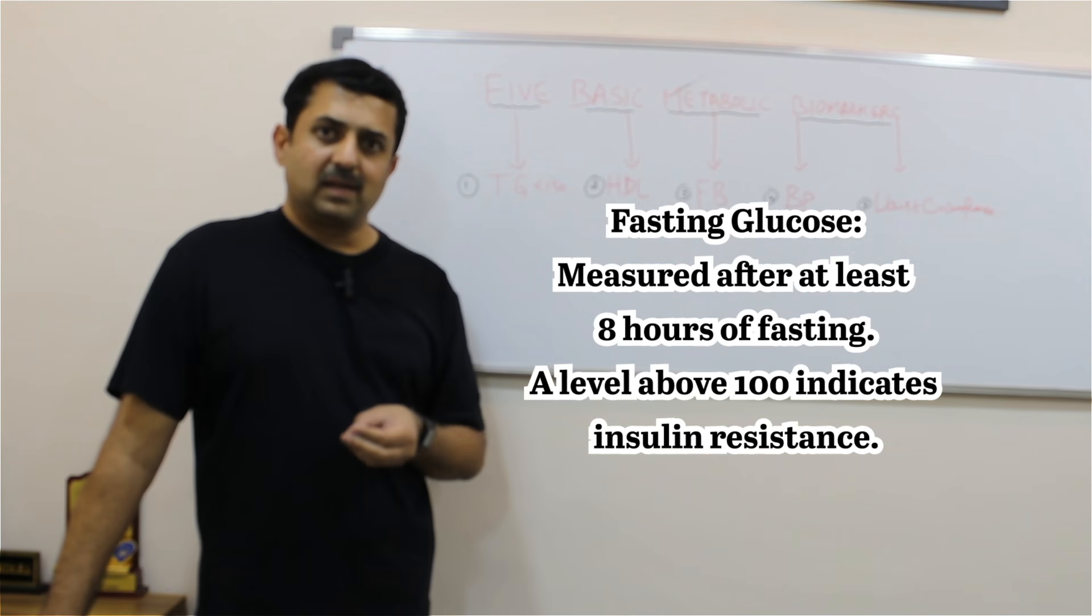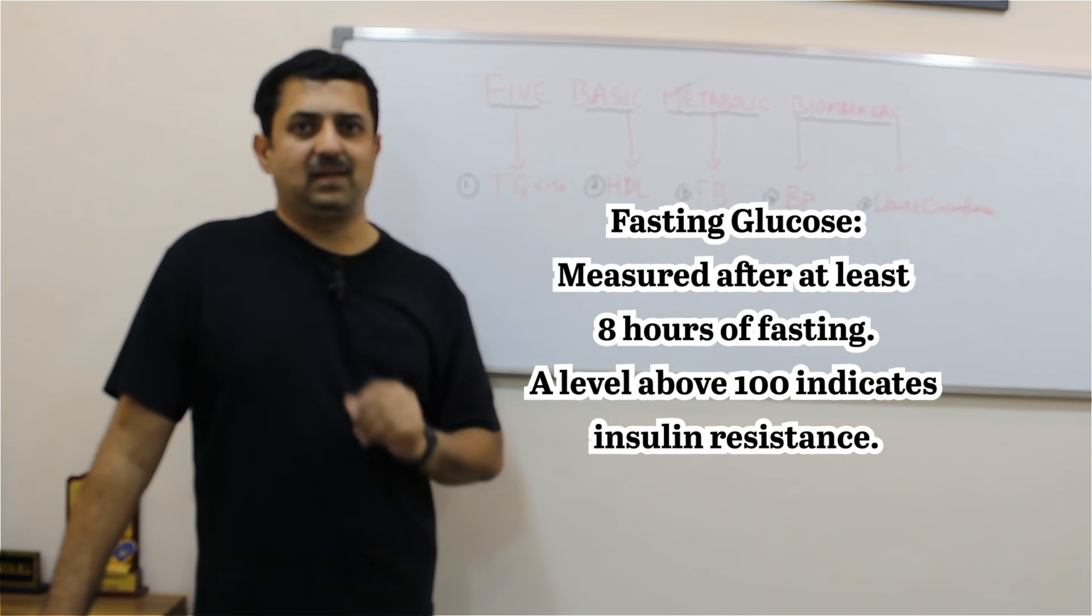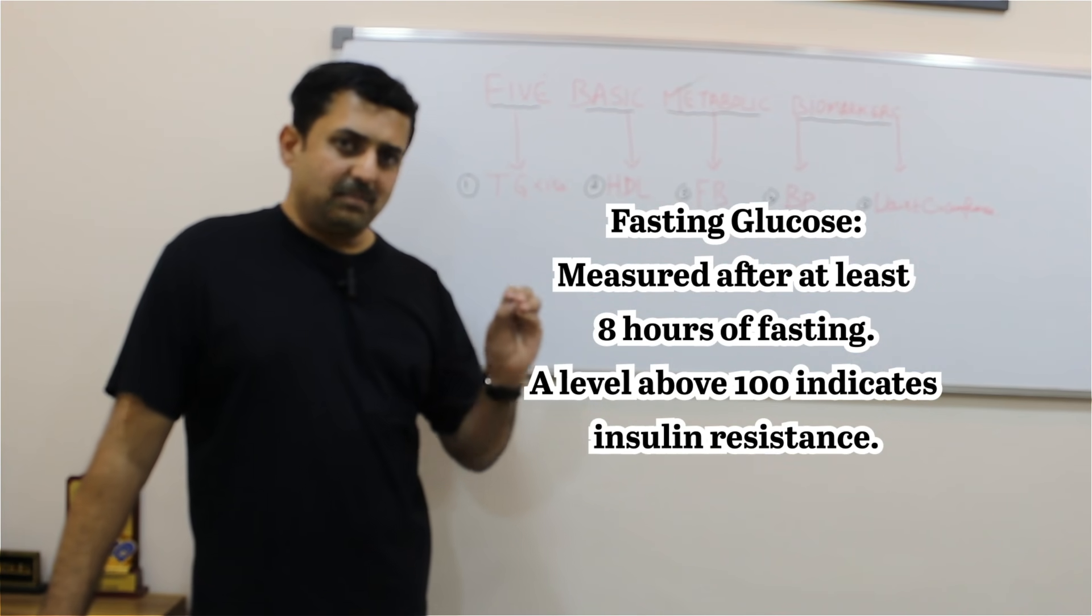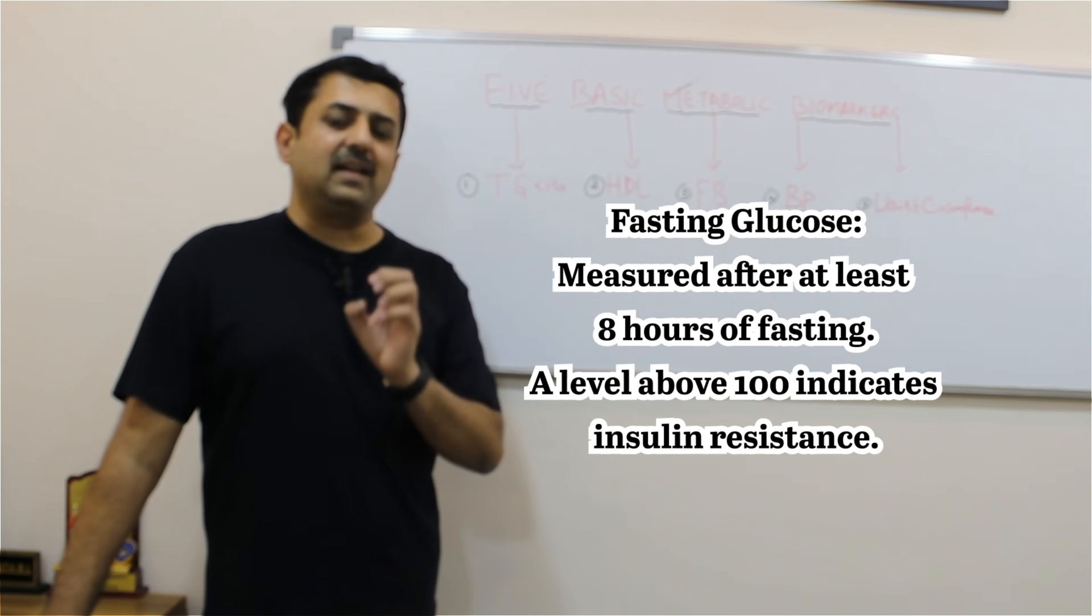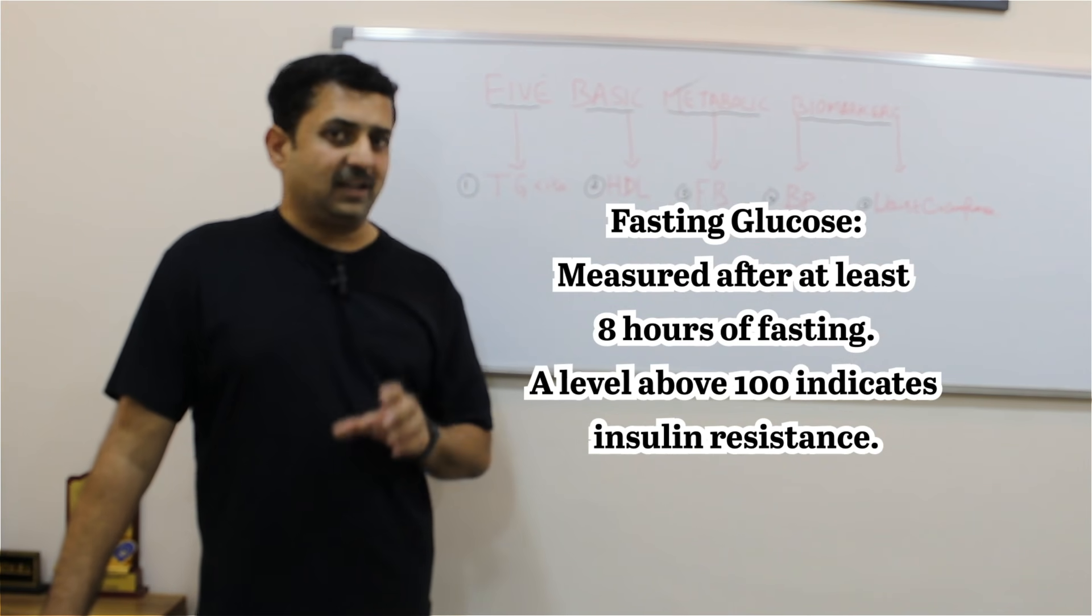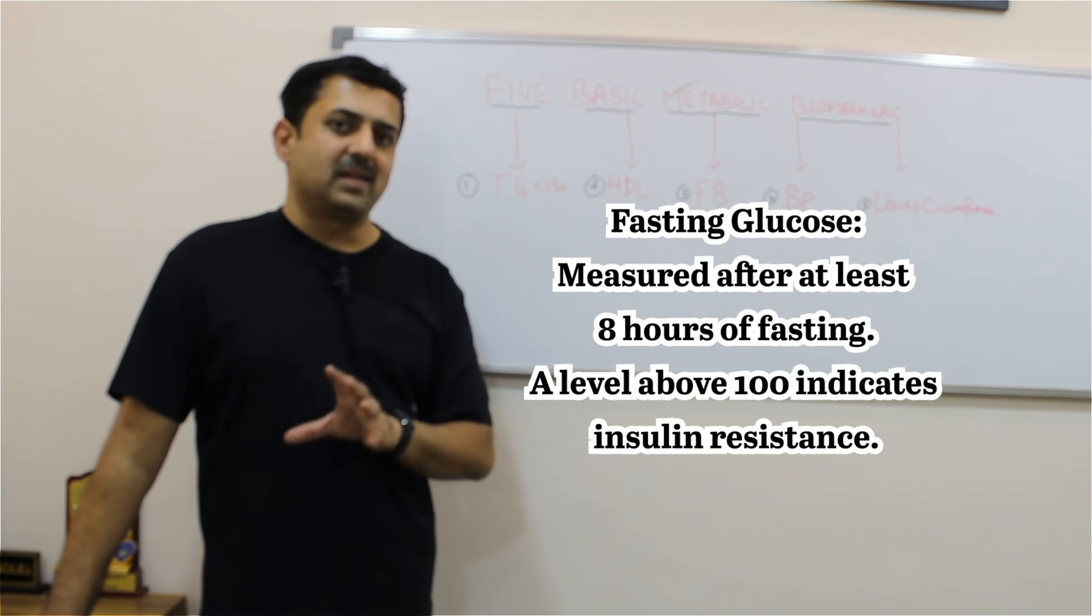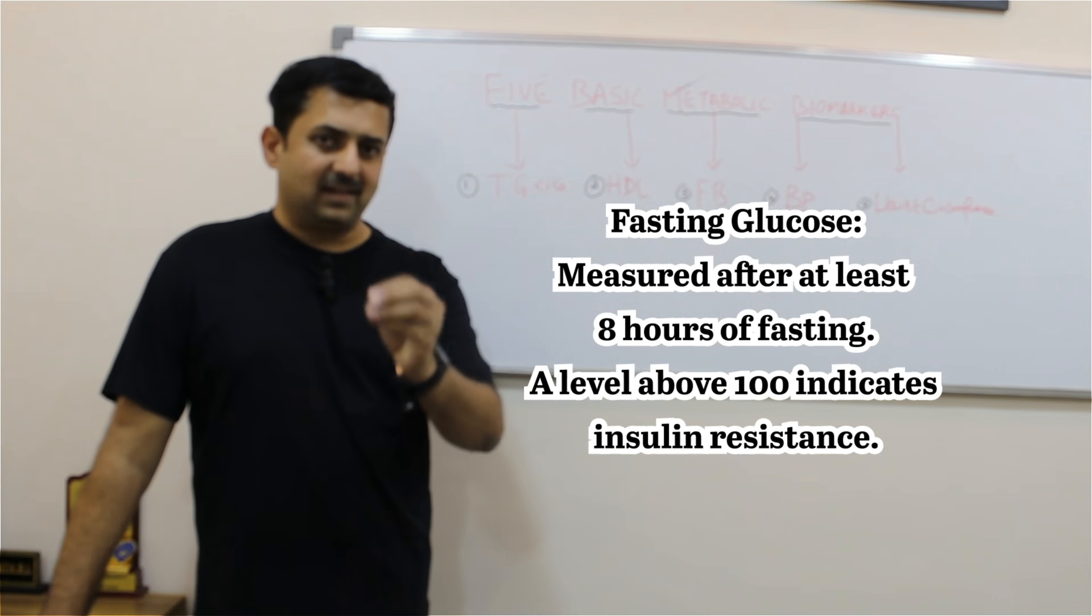But your HbA1c is also normal. Your fasting blood sugar, anything more than 100, indicates you are having insulin resistance, even though your HbA1c is normal. If your fasting blood sugar is above 100, that indicates some kind of metabolic dysfunction.